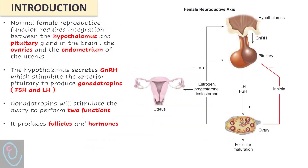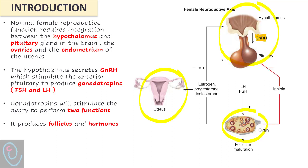Normal female reproductive function requires integration between the hypothalamus and pituitary gland in the brain, the ovaries, and the endometrium inside the uterus. The hypothalamus secretes GnRH, which stimulates the anterior pituitary gland to produce gonadotropins — FSH and LH.